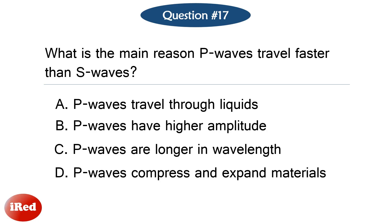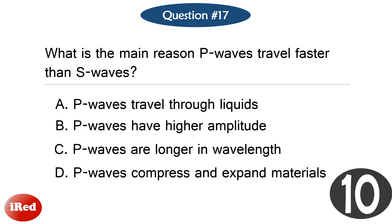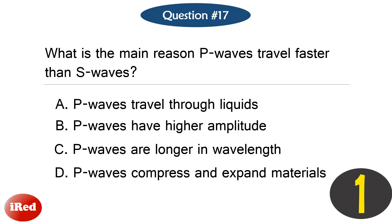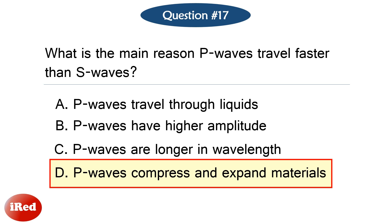Question number seventeen. What is the main reason P waves travel faster than S waves? The correct answer is letter D, P waves compress and expand materials.